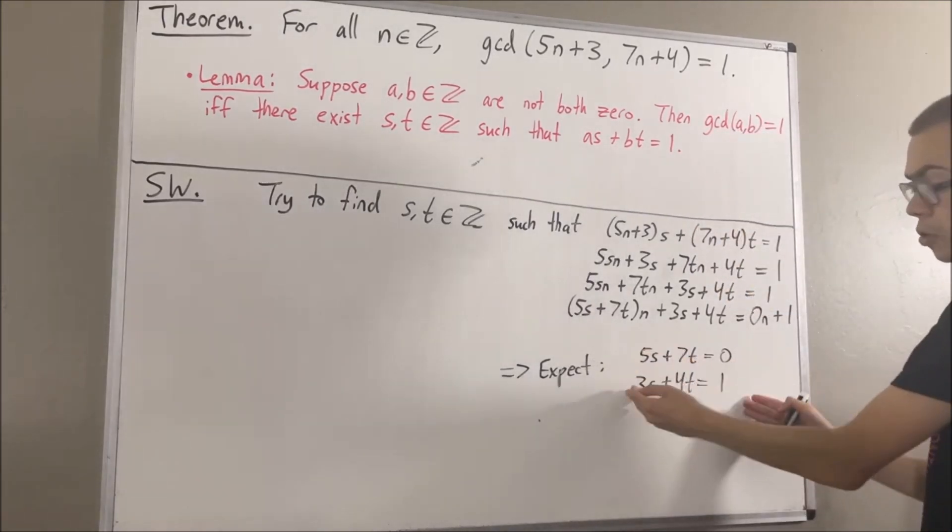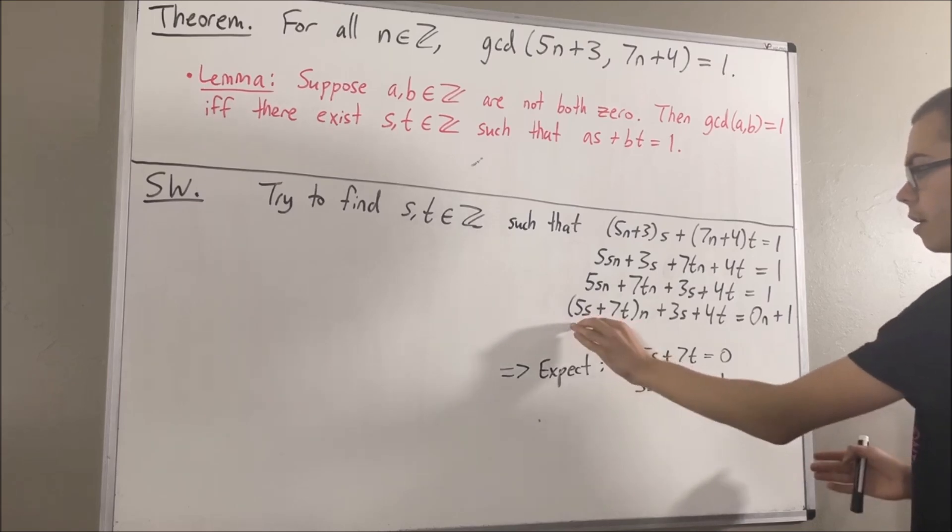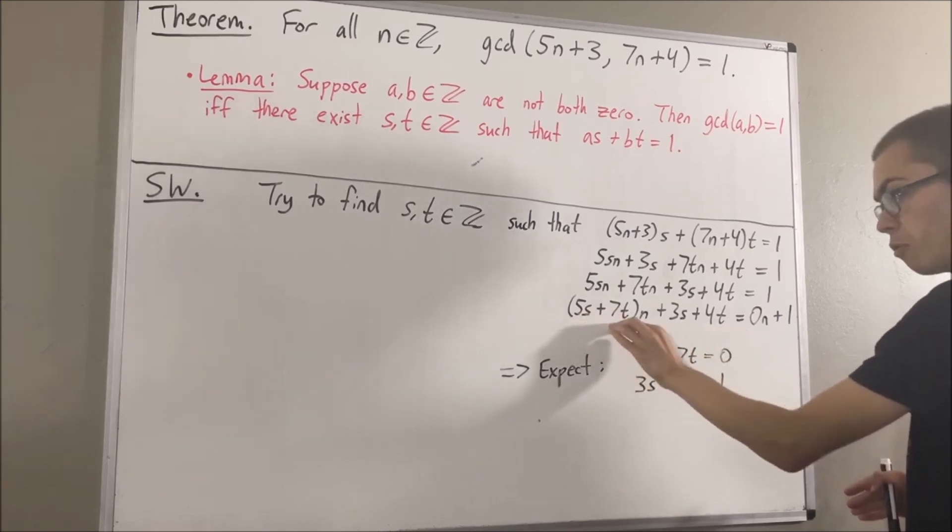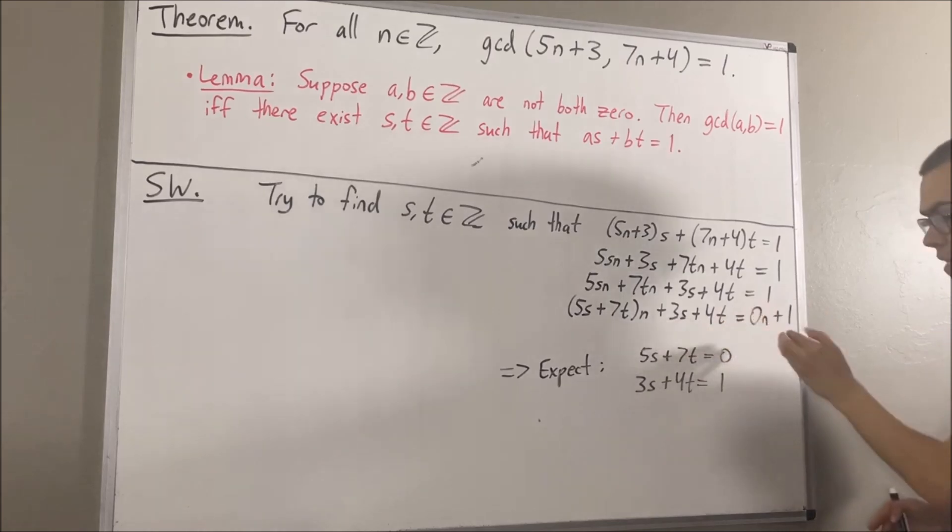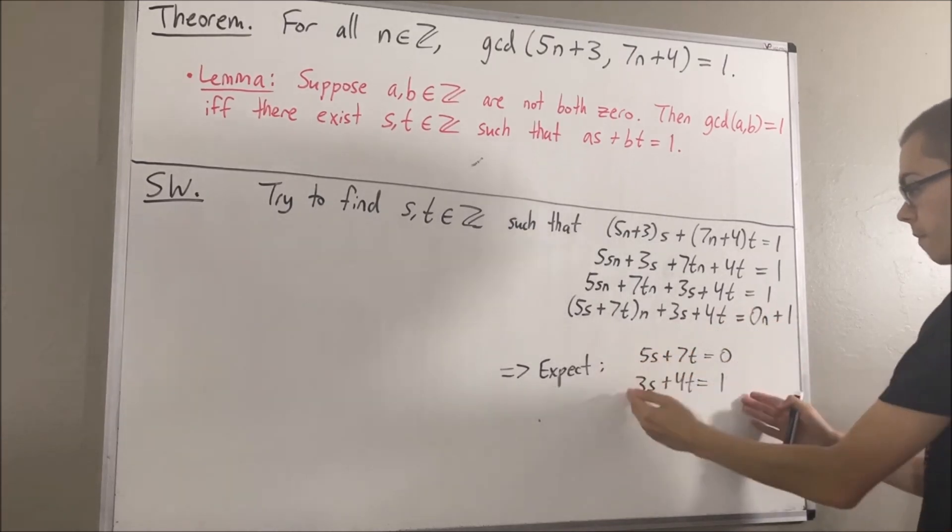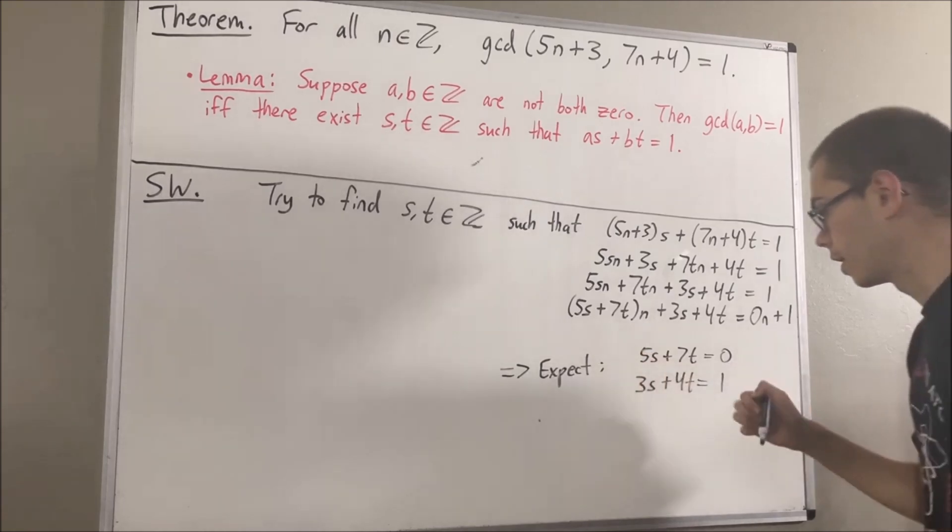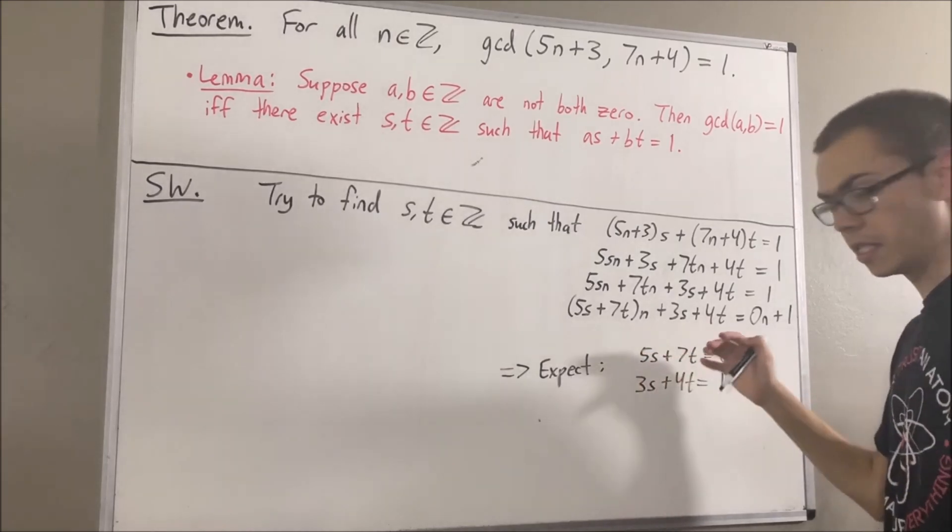Because if these two things are true, then the left-hand side is 0n plus 1, the right-hand side is 0n plus 1. And we can solve this system of equations to obtain that s is equal to 7 and t is equal to negative 5.